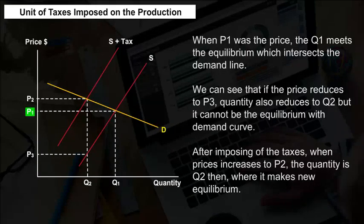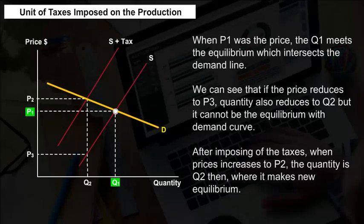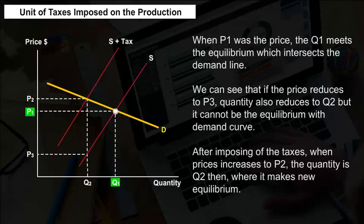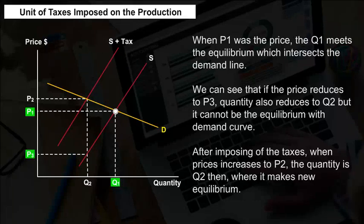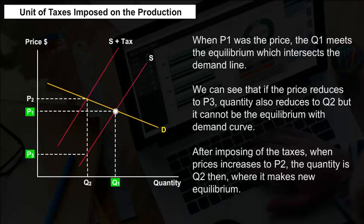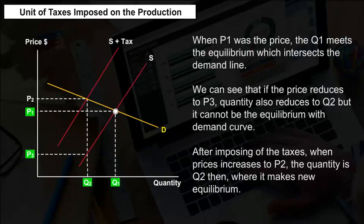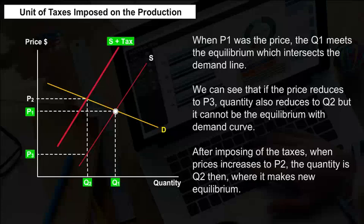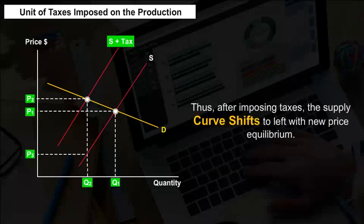When P1 was the price, Q1 meets the equilibrium which intersects the demand line. If the price reduces to P3, quantity also reduces to Q2, but it cannot be the equilibrium with the demand curve. After imposing the taxes, when price increases to P2, the quantity is Q2 where it makes a new equilibrium. Thus, after imposing taxes, the supply curve shifts to the left.